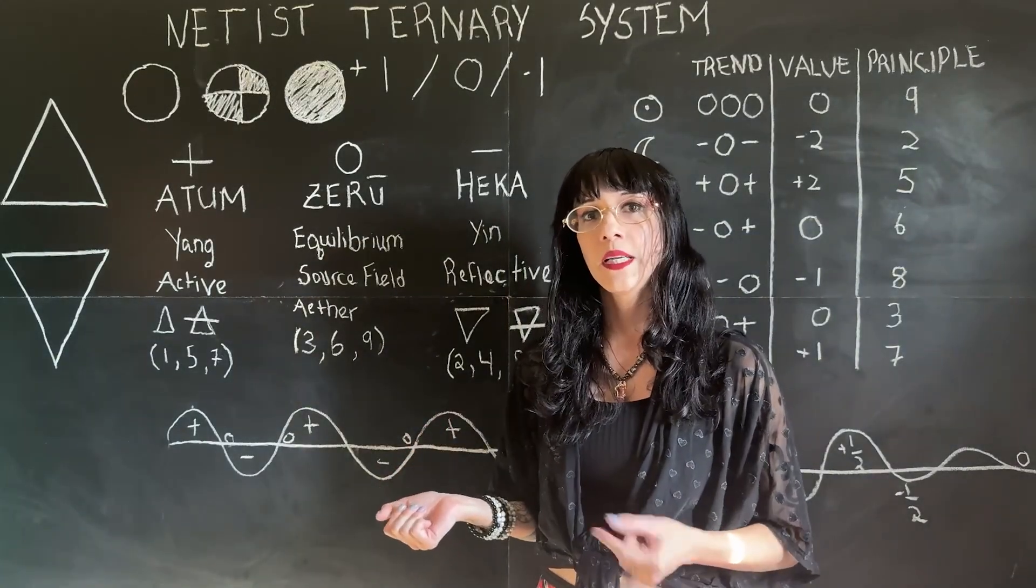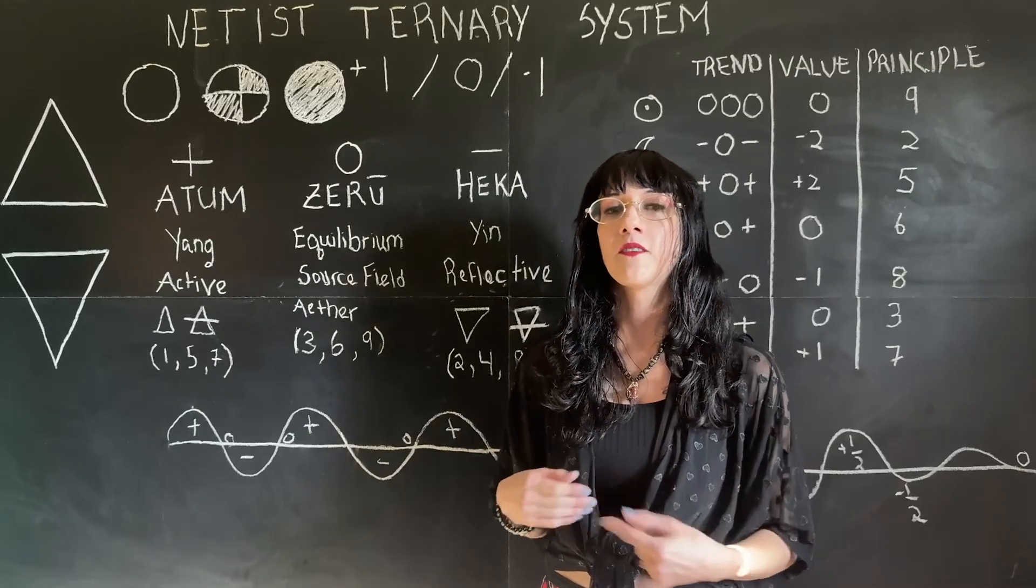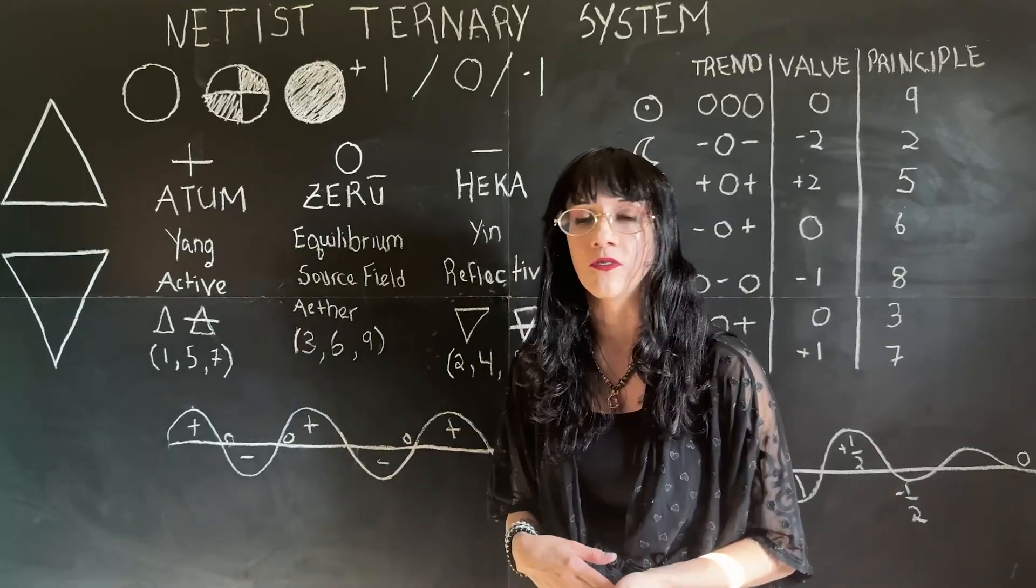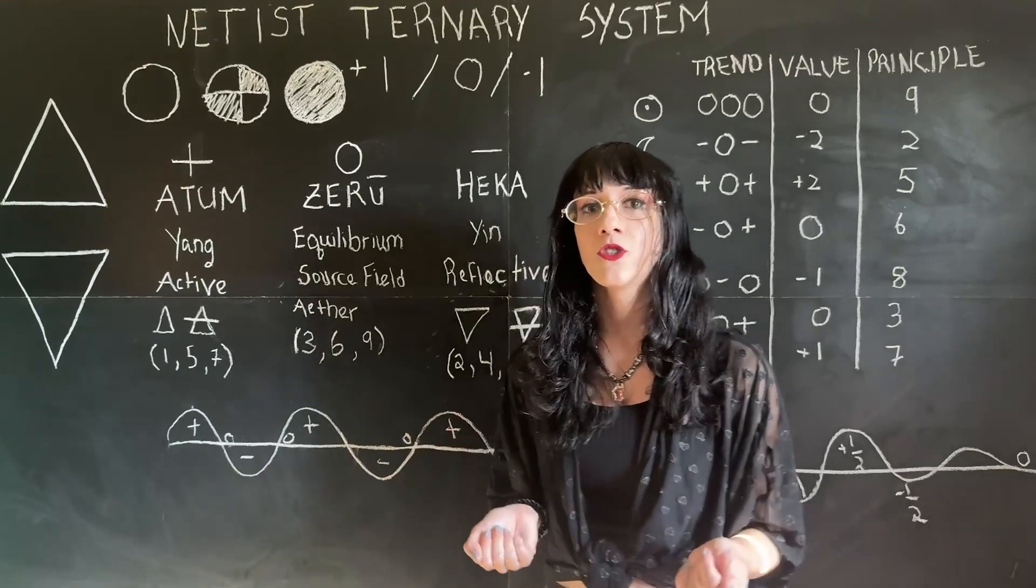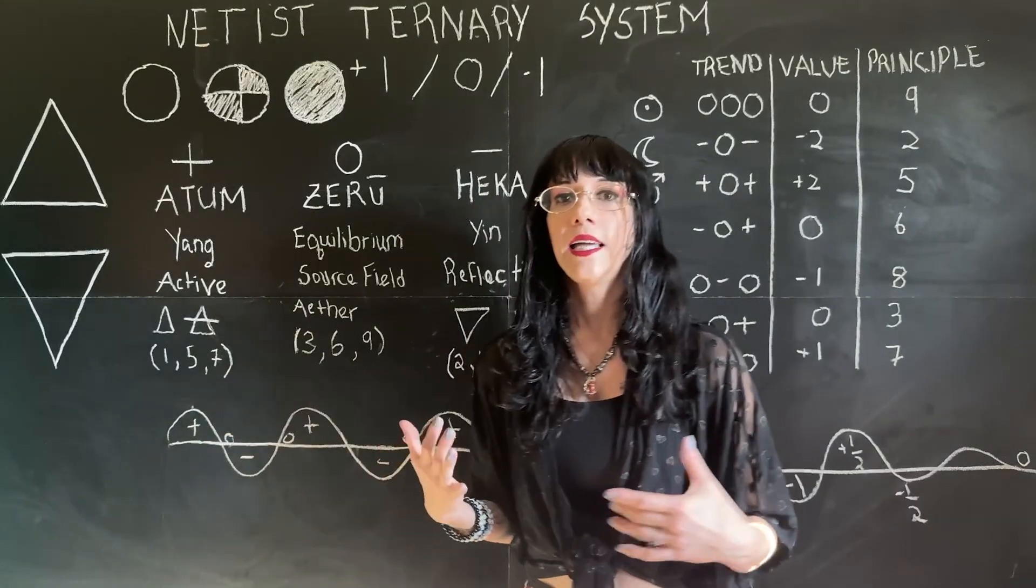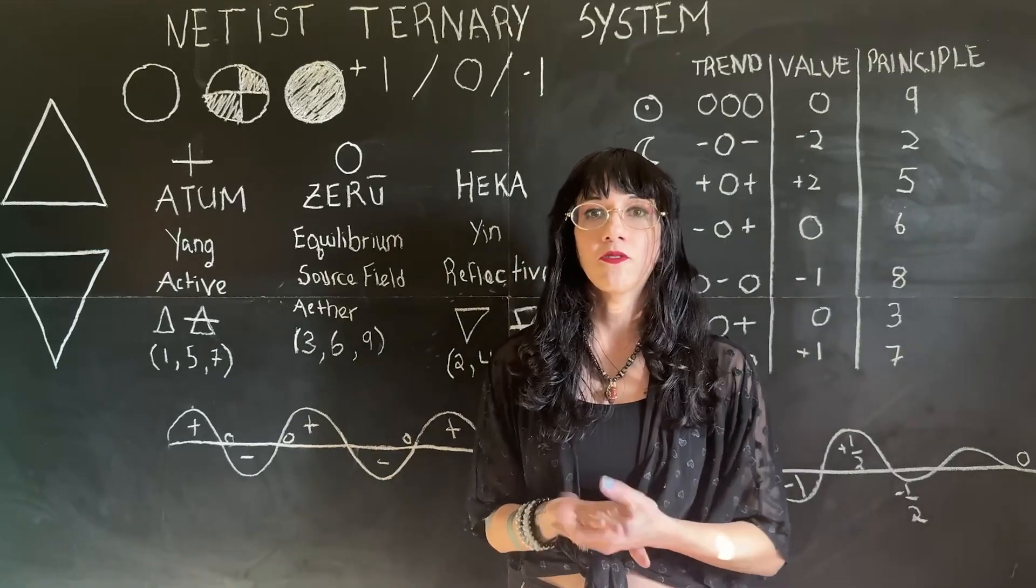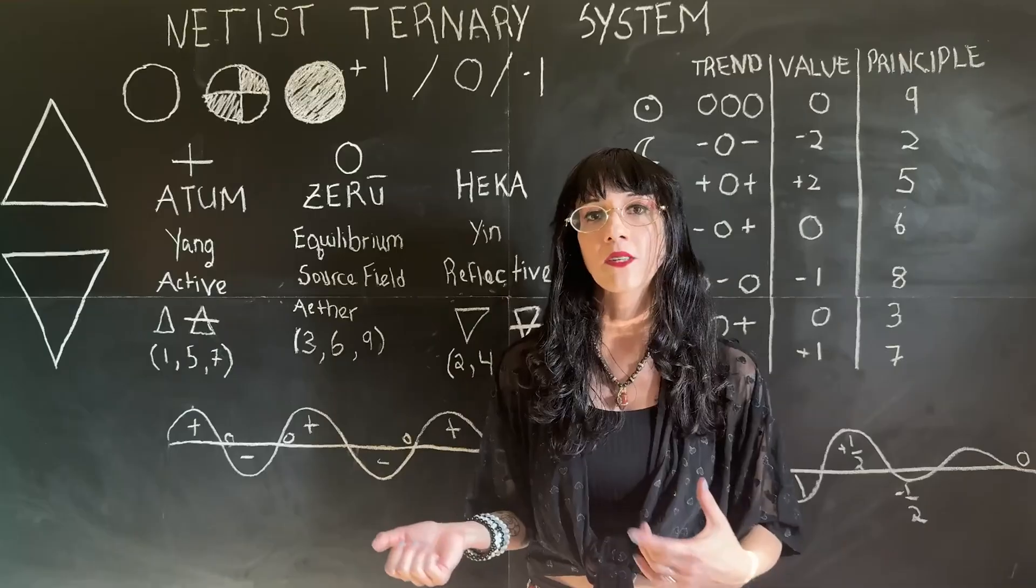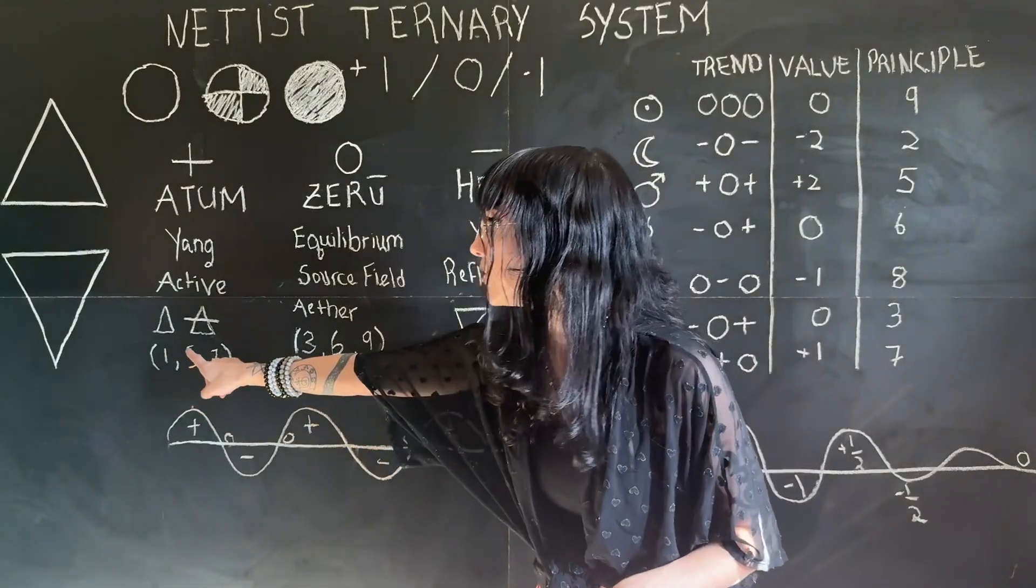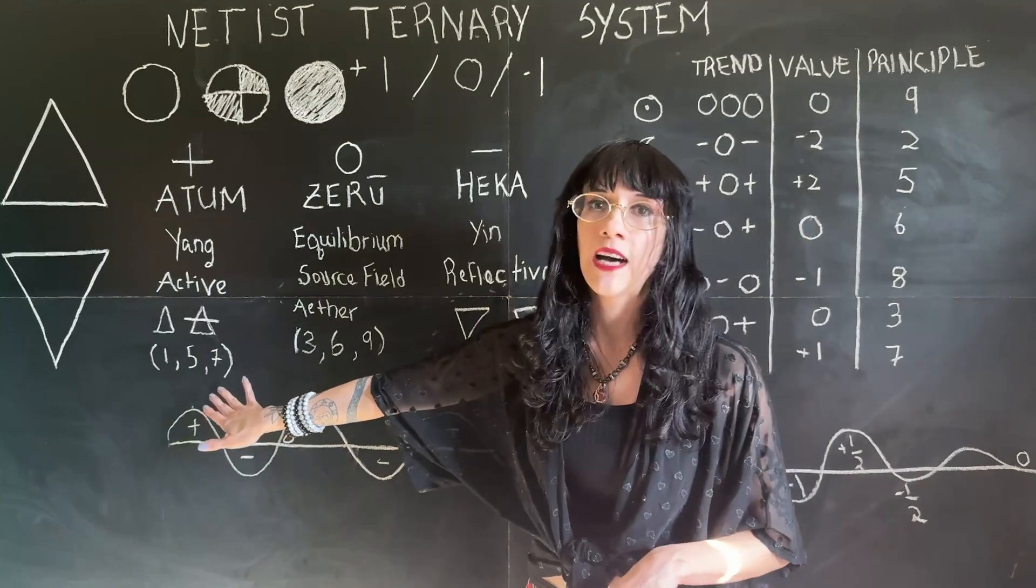Atum is the name. It comes from ancient Egyptian mythology. Atum was the first emanation from nothingness, from the primordial state of the universe. So it is that first conscious leap. In netism, it represents that male active force. It's that first conscious spark from the threshold. And this can be represented on the macroscopic and in the microscopic. Alchemically, it links to fire and to air. And it is represented by the number principles 1, 5, and 7.